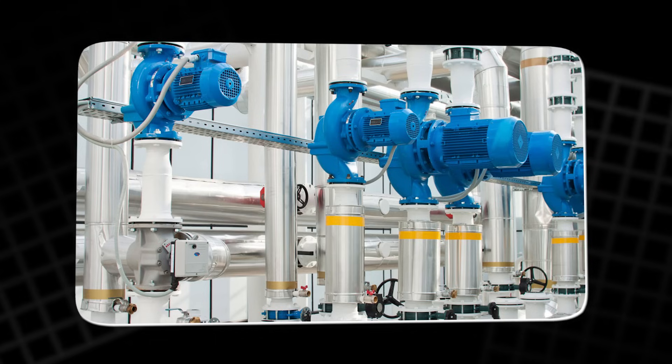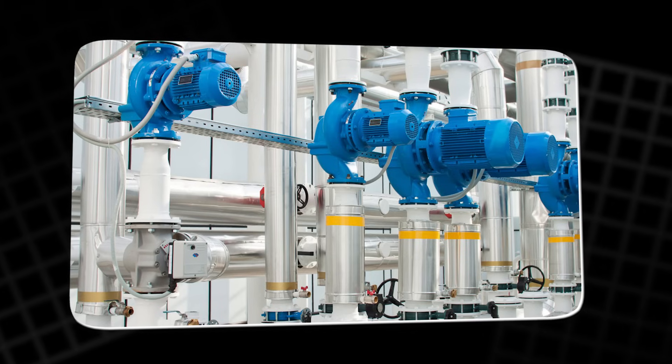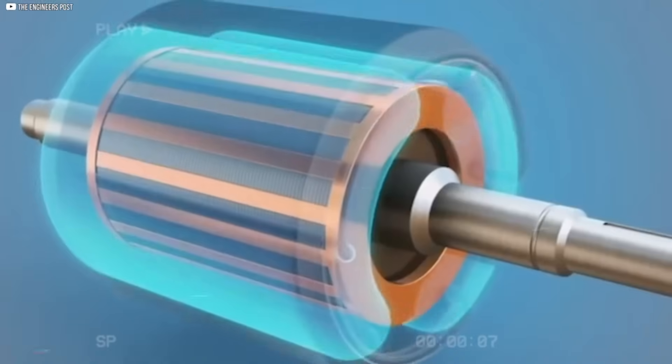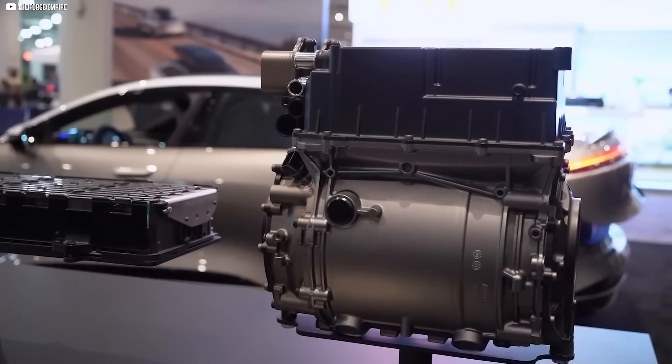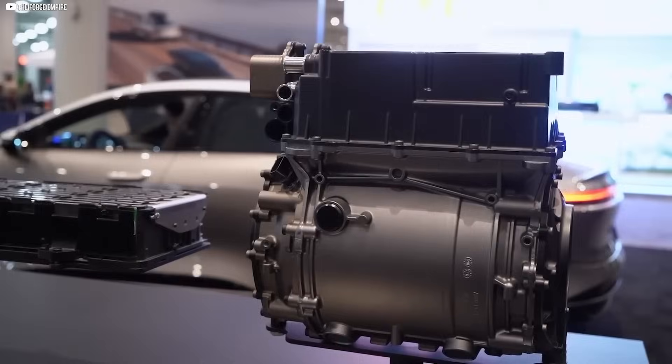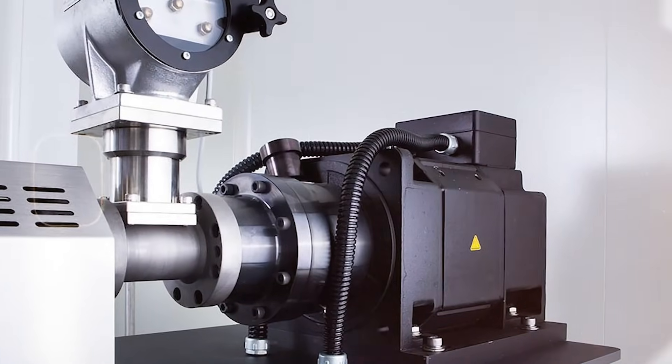Factories that run pumps, blowers, and conveyor belts are perfect examples. These machines consume power around the clock, and even small efficiency improvements can translate into huge savings. By operating cooler and lighter, electrostatic motors can reduce both running costs and downtime in such environments.